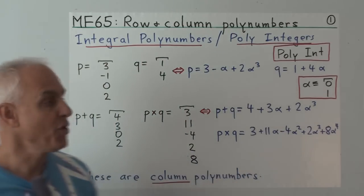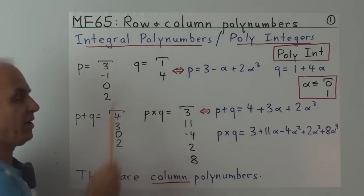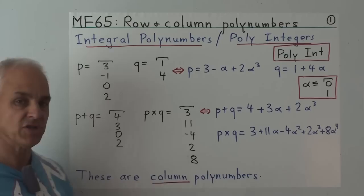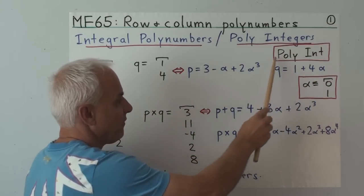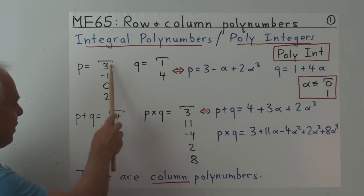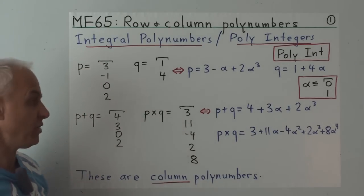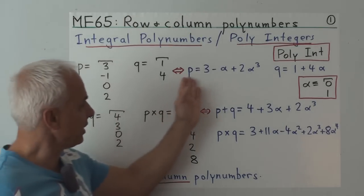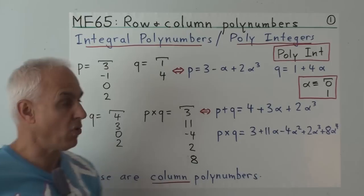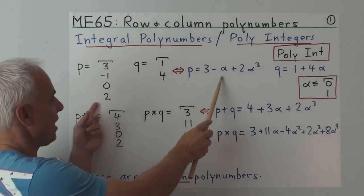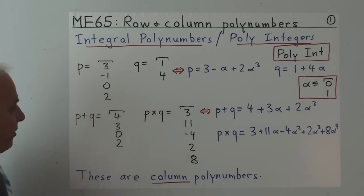To set the stage, let's do a quick review of basic arithmetic with the polynumbers we've been considering. We'll talk mostly about integral polynumbers, where the coefficients are integers — we might also call these poly integers. There's an integral polynumber P, and another one Q. They are just columns of integers. We can write them in linear form by introducing the special polynumber alpha, which is the polynumber [0,1]. So P can be written as 3 minus alpha plus 2 alpha cubed, while Q is 1 plus 4 alpha. Here are their sum and product.